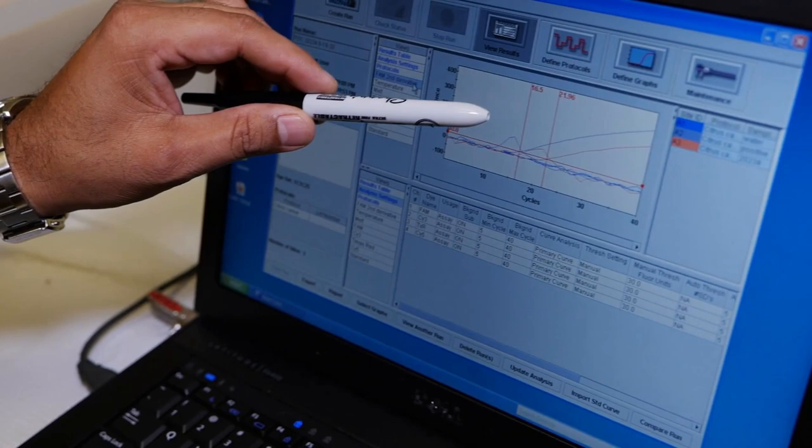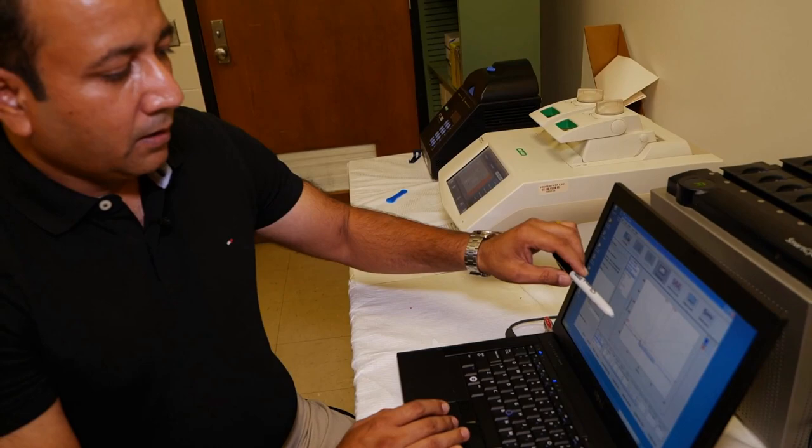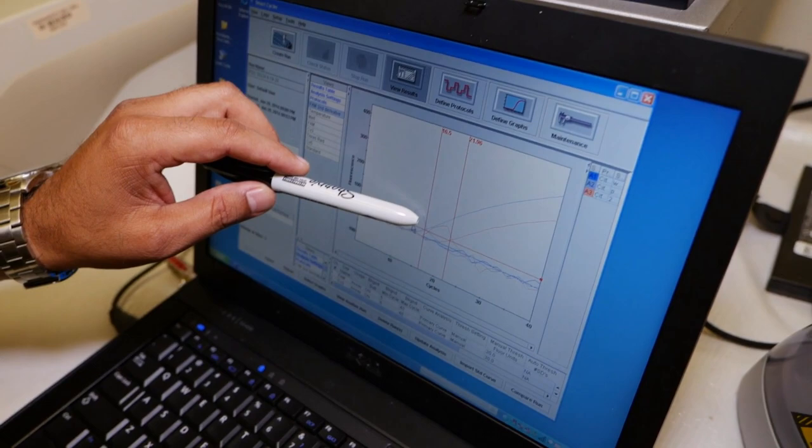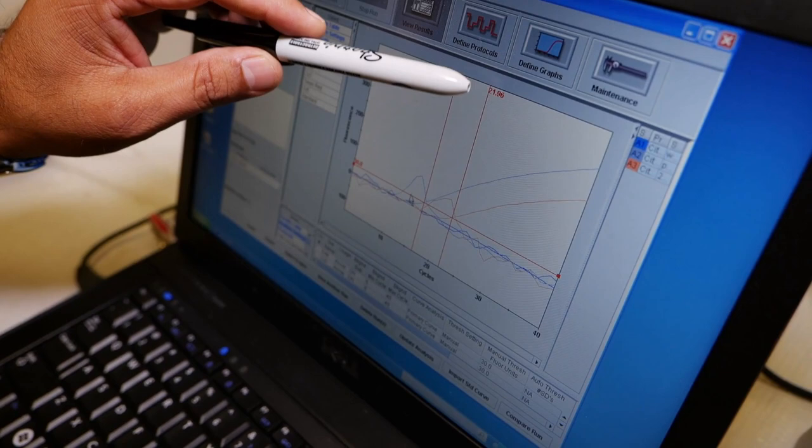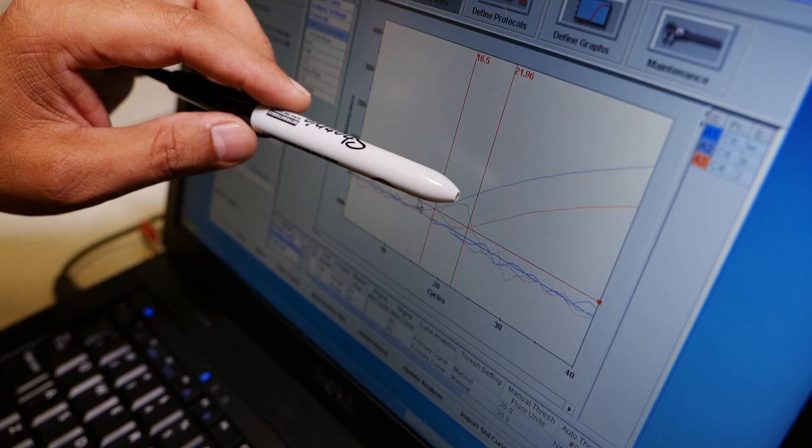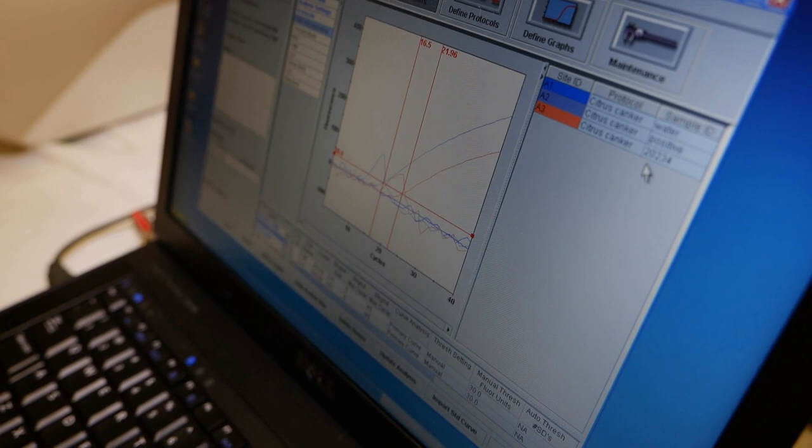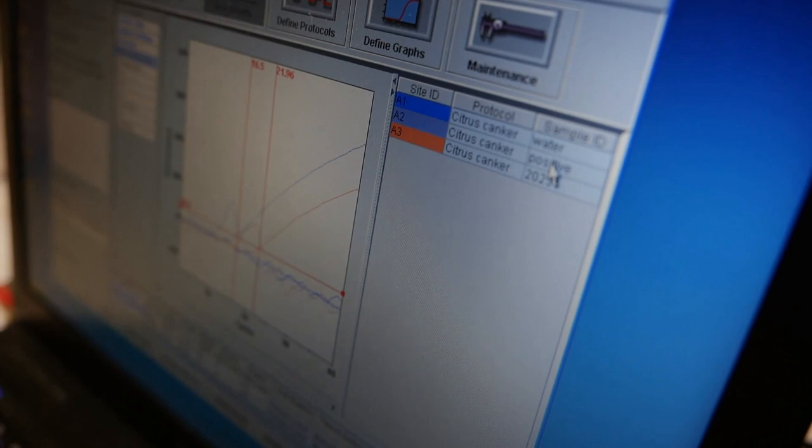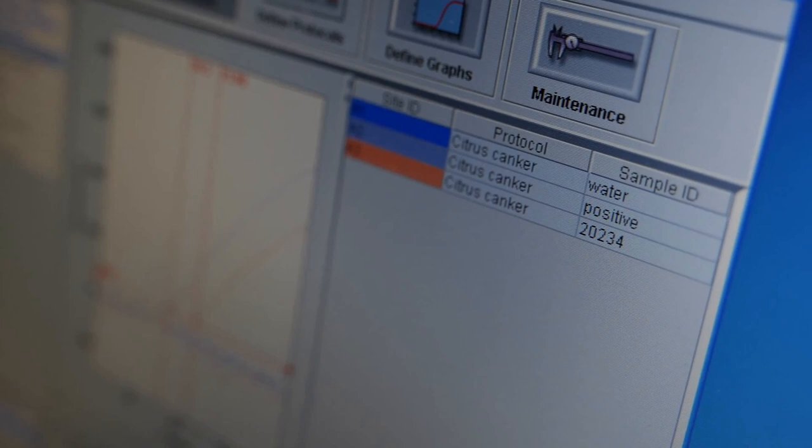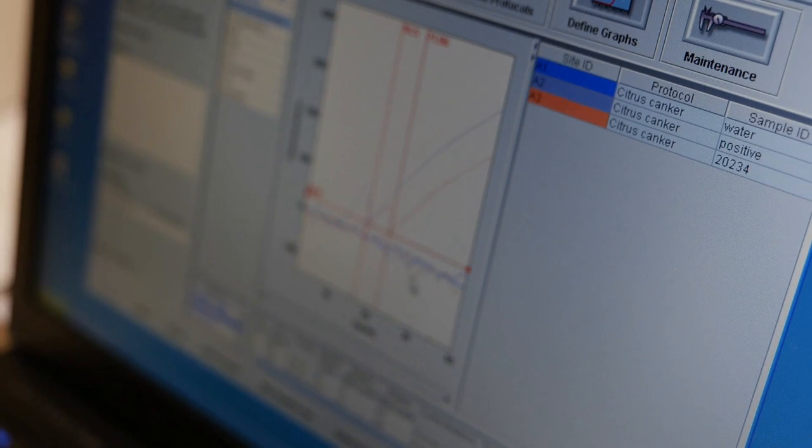This is an example of one of the citrus canker samples that we have here. You see here three lines. What you are seeing here is two samples - one is our positive, which is this blue line, and the other one is our sample. You can see it amplified after 21 cycles. That is a positive, that is considered a positive sample. Here you can see the results - you have the water which is our negative control, the positive which is another control.